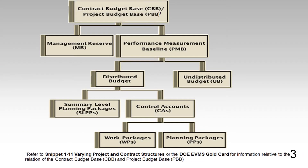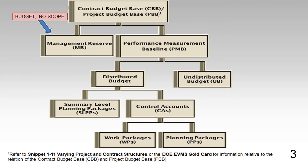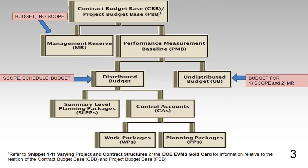This slide illustrates the various contract and project-level terms to better understand the concept of Undistributed Budget. Starting at the contract budget base, or project budget base, the management reserve is budget with no scope or schedule. The performance measurement baseline is comprised of two types of budget and work scope: distributed and undistributed. The distributed budget includes scope, schedule, and budget. The undistributed budget includes budget for scope, and the contractor's project manager may set aside a portion of that for MR budget for management control purposes. Sometimes, distributed budget and undistributed budget are functionally referred to as time-phased distributed budget versus non-time-phased undistributed budget, because UB is missing the schedule aspect of the scope, schedule, budget integration.